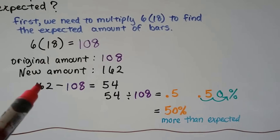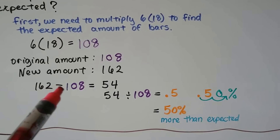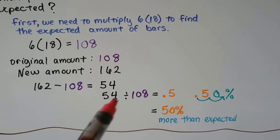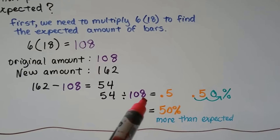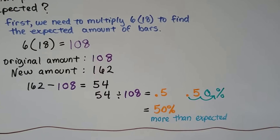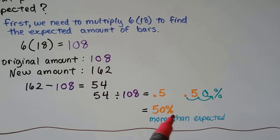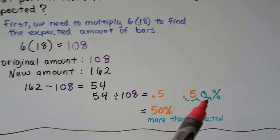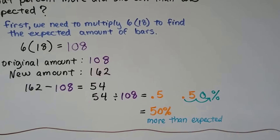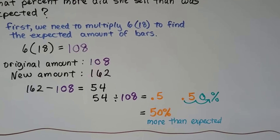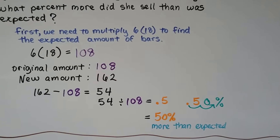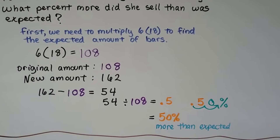We subtract 162 minus 108 and get 54. We take that 54 and divide it by the original amount, 108, and we get 0.5. We turn that into a percentage, and that means she sold 50% more than she was expected to — so the percentage increase was 50%.